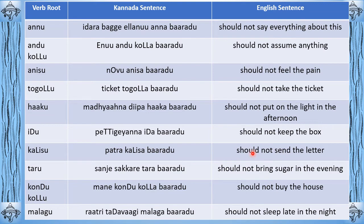'Kondukollu' — 'mane kondukollabaradu' — should not buy the house. 'Malagu' — 'ratri tadavagi malagabaradu' — should not sleep late in the night. So this is the baaradu drumbeat. Quick summary: baaradu is used for saying 'should not' — restriction. It is exactly opposite of bahudu. Bahudu means you are allowed to do something. For example, 'neevu walagade barabahudu' means you can come inside. If you want to restrict, you say 'neevu walagade barabaradu' — you cannot come inside. One gives permission, the other restricts permission.